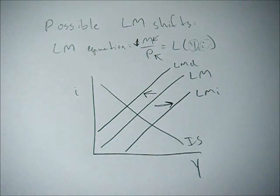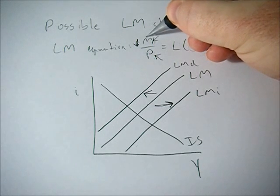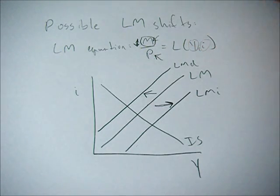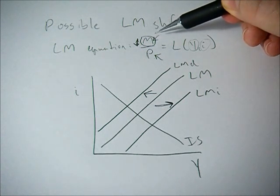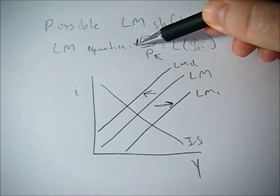Now, what can also happen is we can see a change in transaction technologies or the velocity of money or something like credit cards. Now this doesn't change the physical money supply, but it makes the real money supply go up.